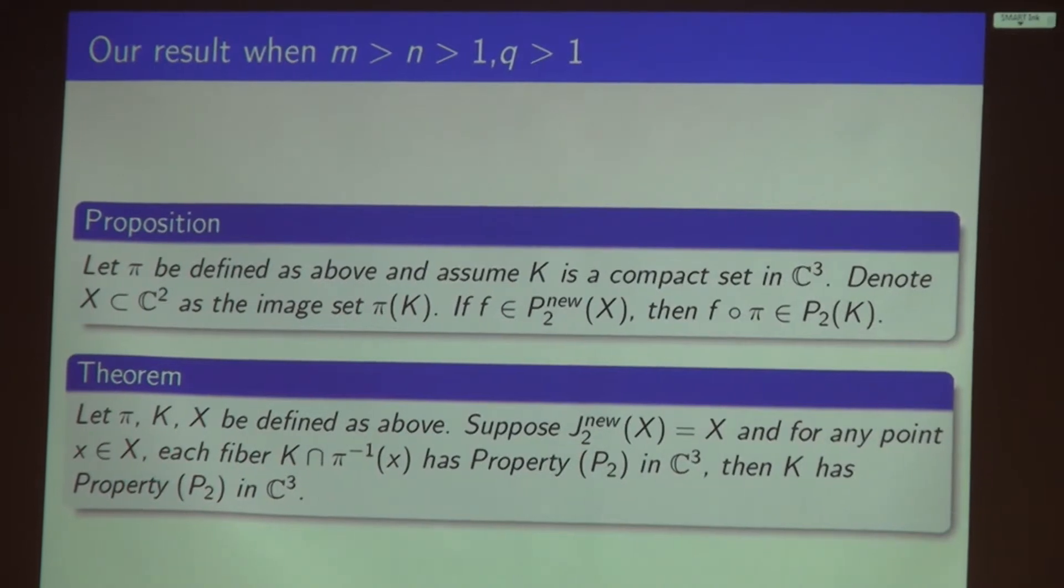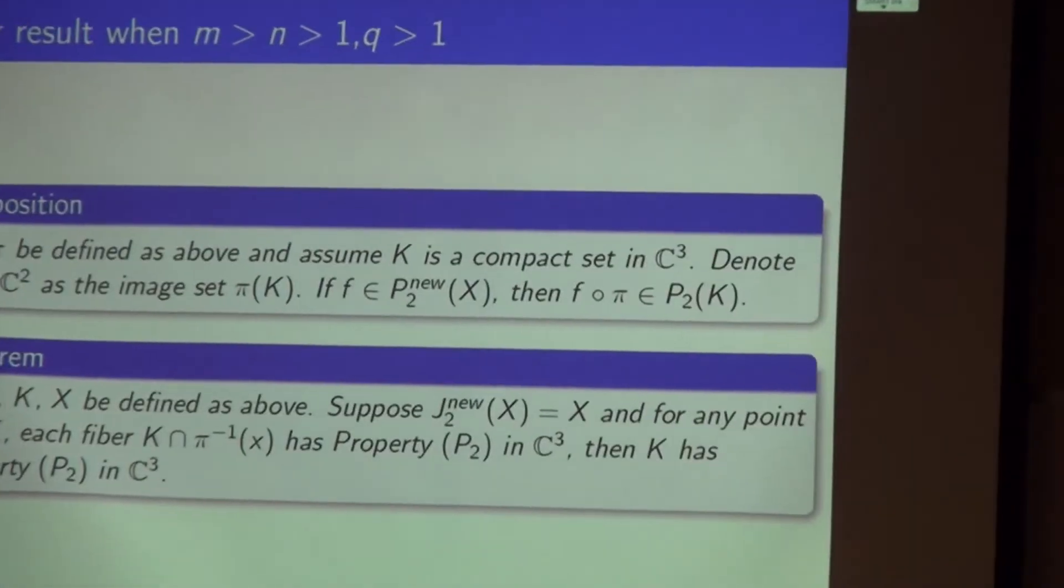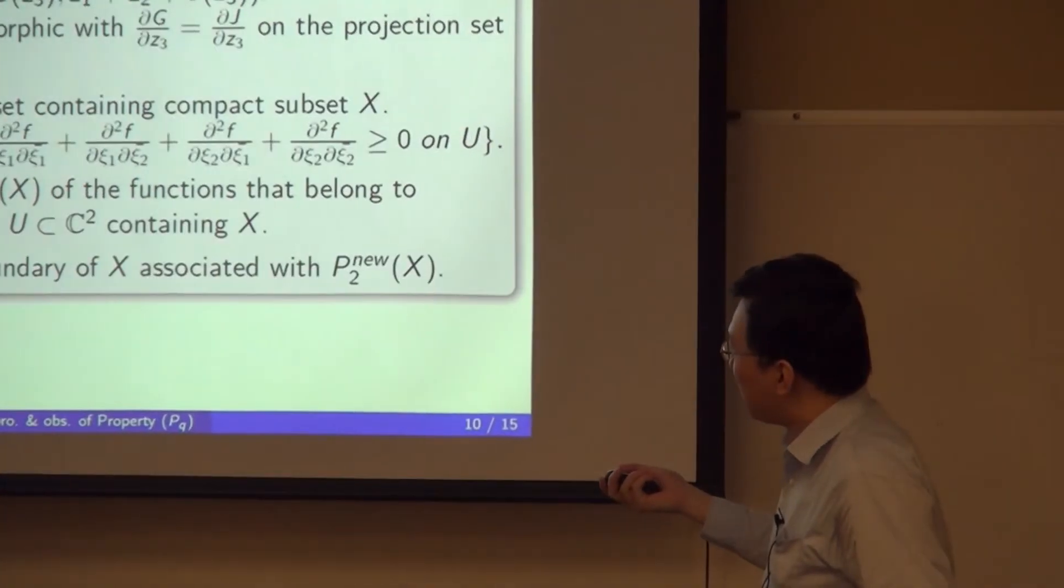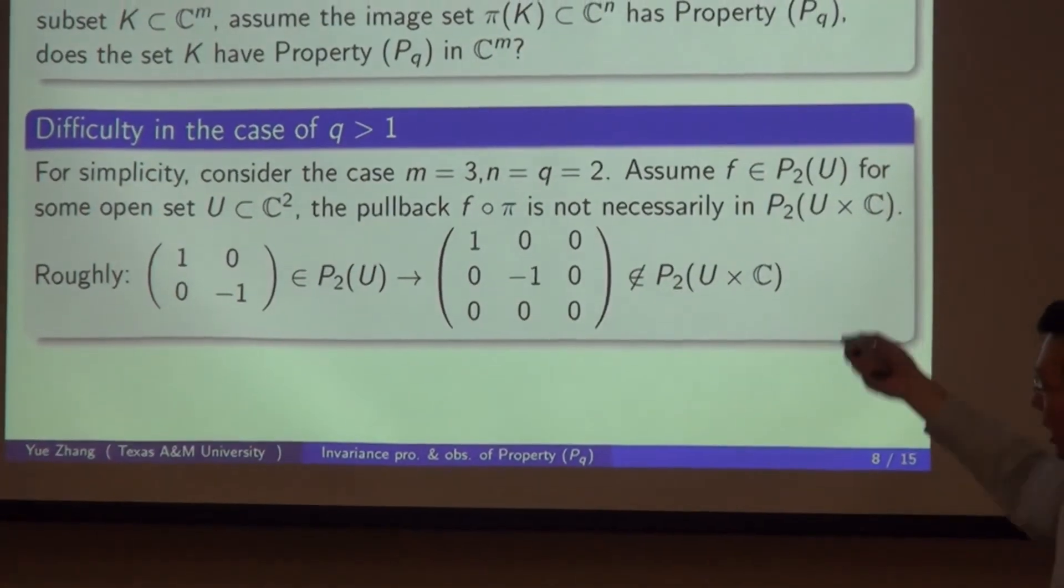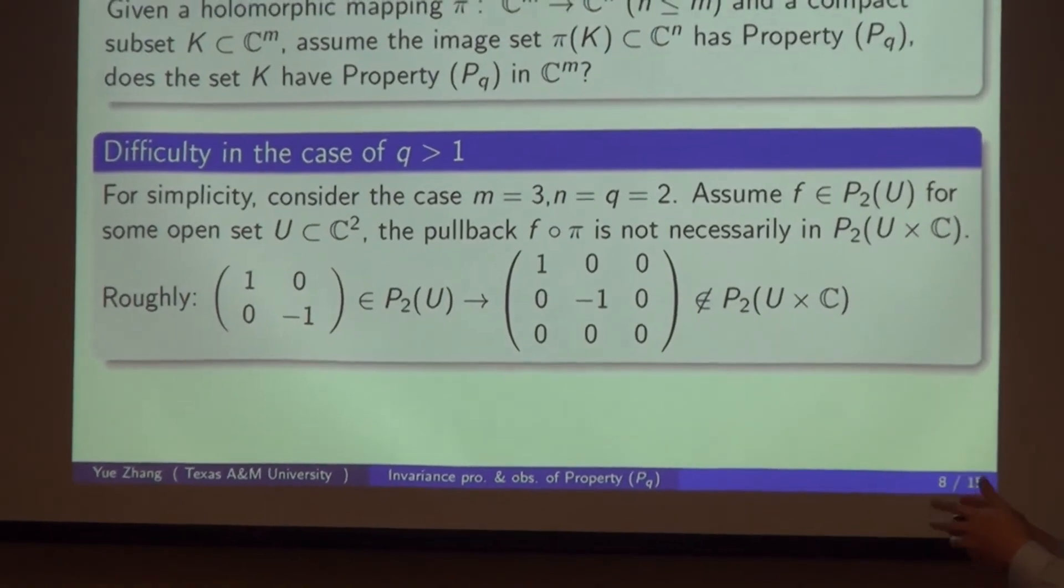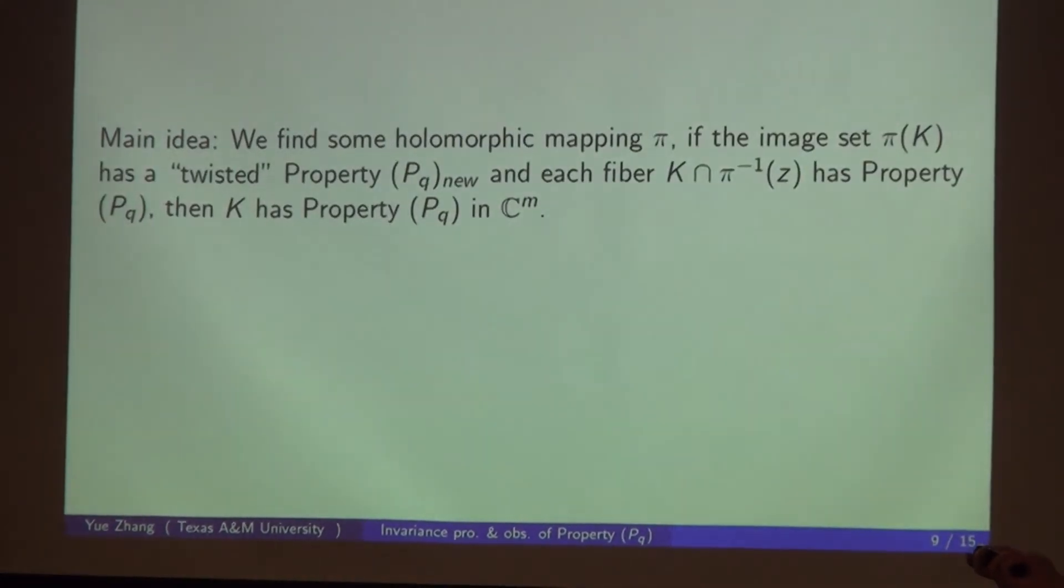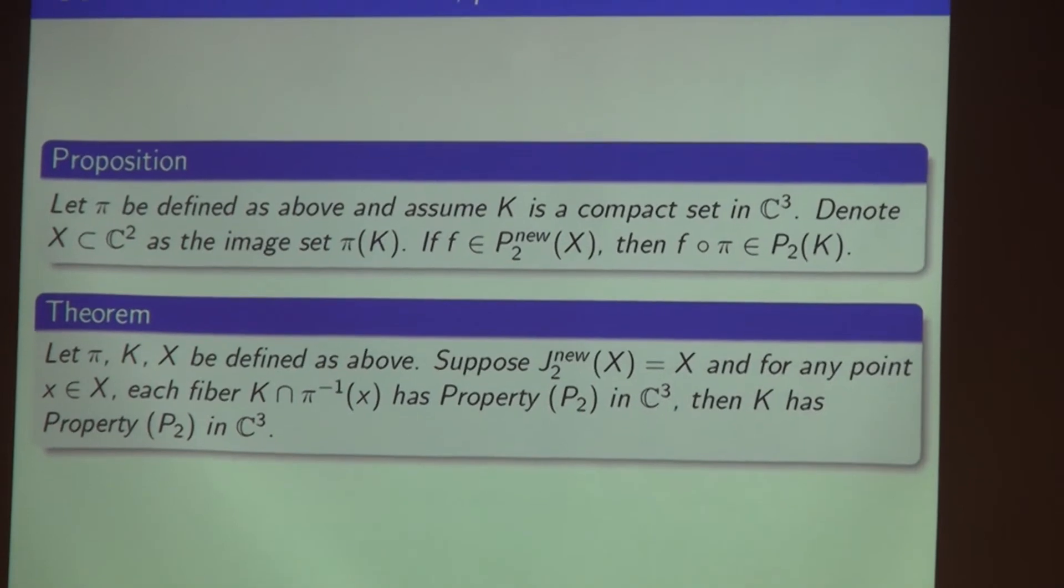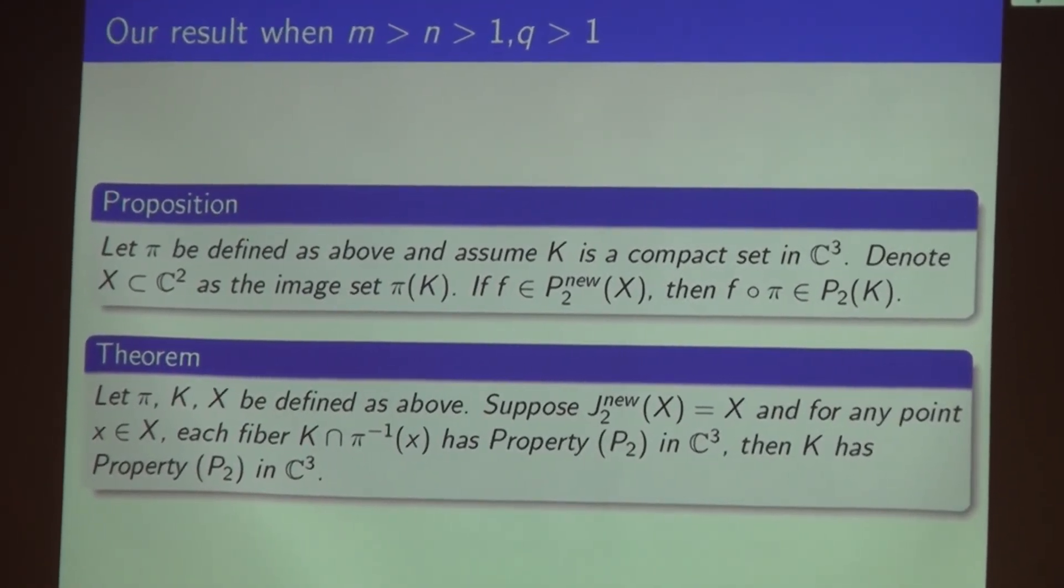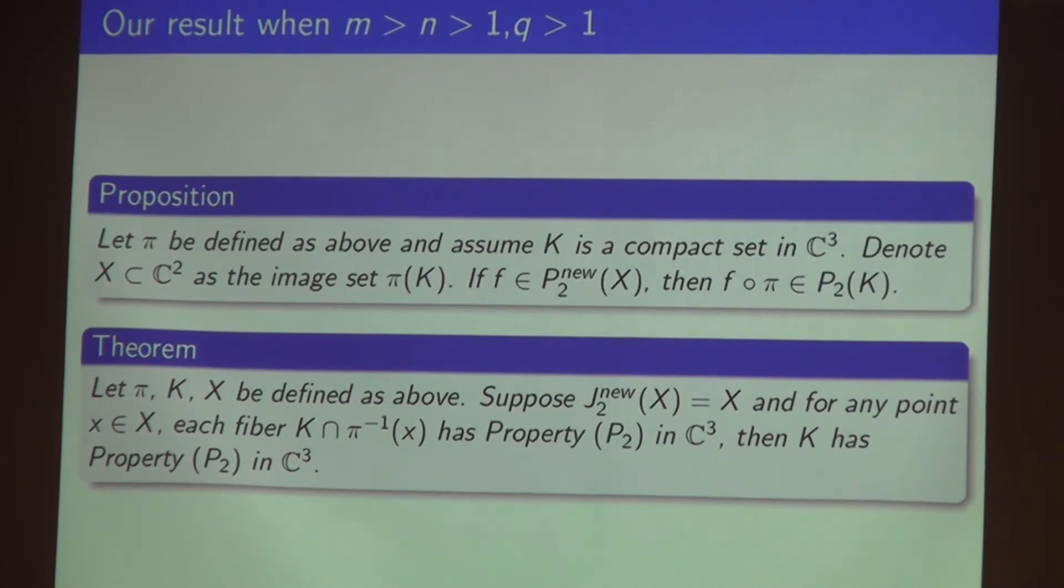The first proposition is a technical thing to overcome the difficulty I had in the previous slide. If you have a function in a low dimension and you take a pullback, the pullback is no longer necessary in the same, in the new P_2 functions. What happened by this technical proposition is if you have pi as above and a compact subset K in C³, and if you denote X as the image set pi(K), then if you take a function F in P_{2,nu}(X), then the pullback F composed with pi is in P_2(K). This overcomes the difficulty in the previous slide.